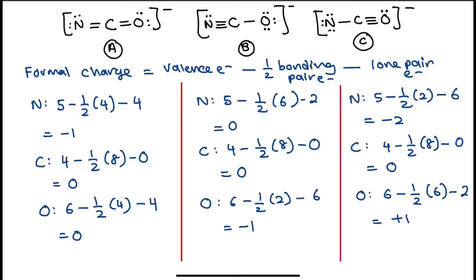Now let's compare all the formal charge values. Structure A has a combination of −1, 0, and 0. Structure B has a combination of 0, 0, and −1. Structure C has a combination of −2, 0, and +1.